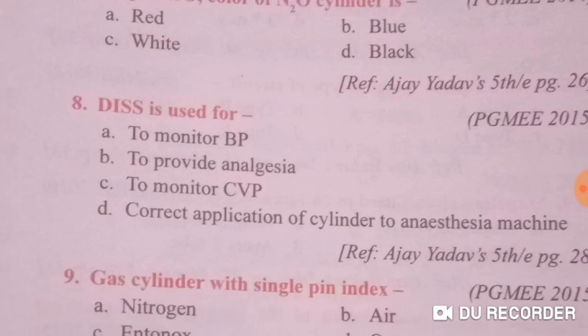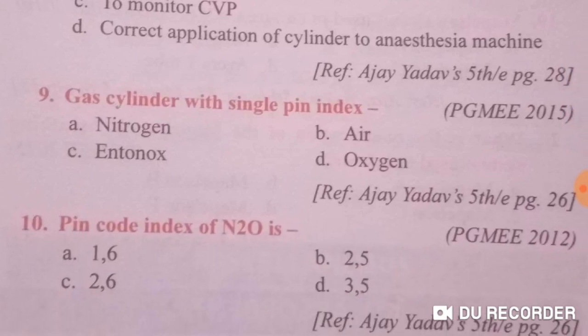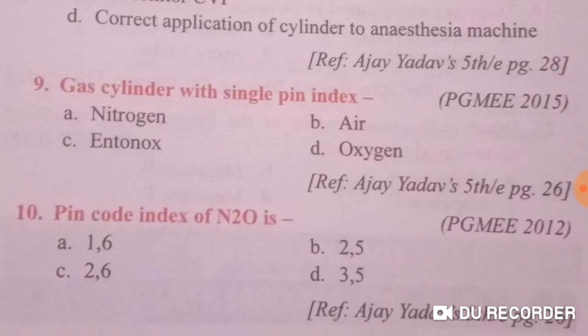This is used for correct application of the cylinder to the anesthesia machine — option D is right. The gas cylinder with a single pin index is with N2O (nitrous oxide). Single pin index is with N2O.